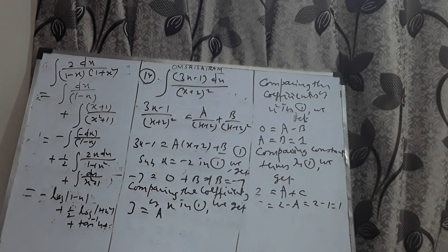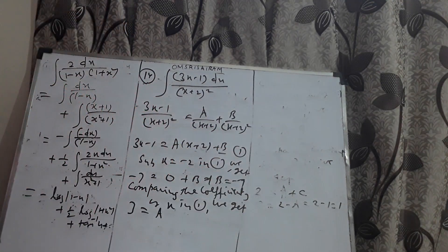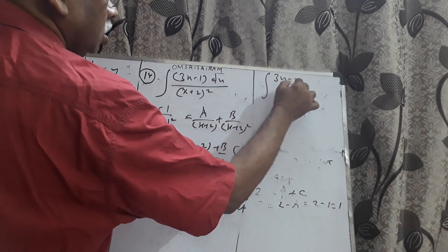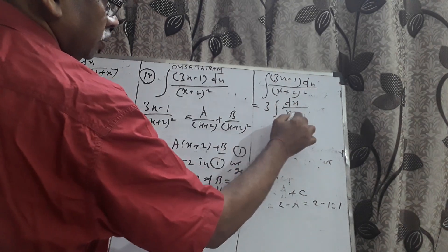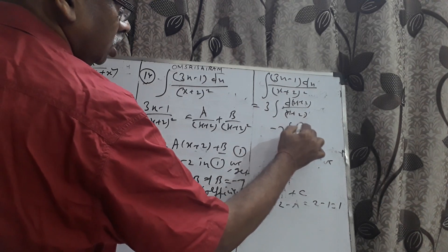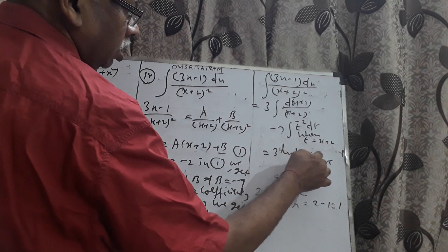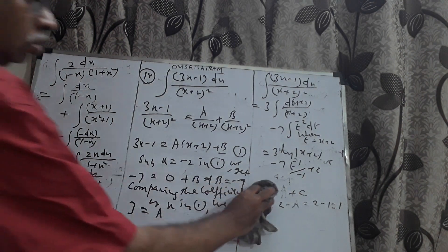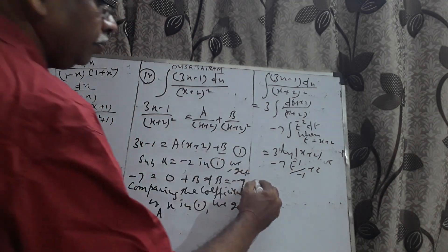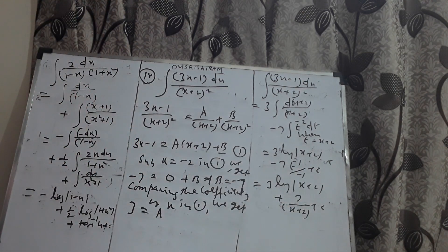With A = 3 and B = -7, the whole integral becomes 3∫dx/(x + 2) + (-7)∫(x + 2)⁻² dx. The first integral gives 3 log|x + 2|. For the second, substituting t = x + 2 gives -7 · t⁻¹/(-1) = 7/(x + 2). The final answer is 3 log|x + 2| + 7/(x + 2) + c.